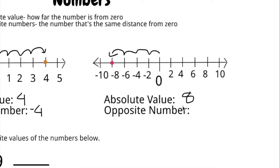And the opposite number — you just go in the opposite direction, eight units. Two, four, six, eight. The opposite of negative eight is positive eight.